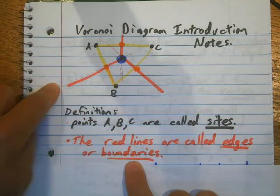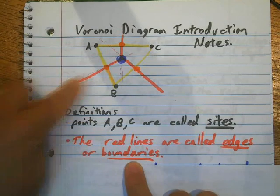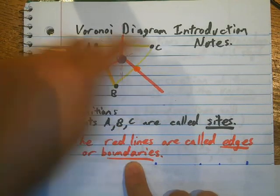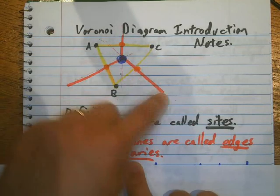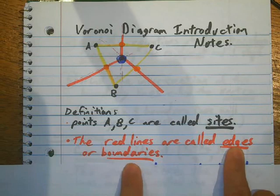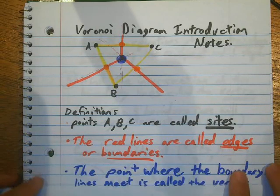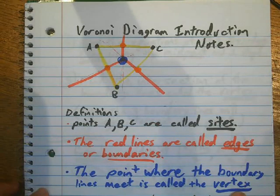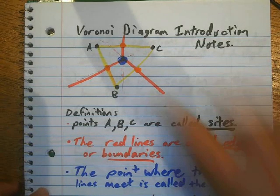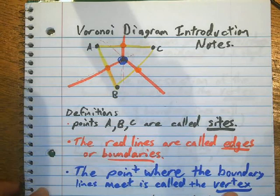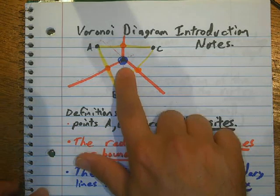The red lines here are boundary lines between A and B. This red line is a boundary between A and C. This red line is a boundary between B and C. Boundary lines, or sometimes they're called edges. And then where all three boundary lines meet is called a vertex. And no matter where you put these points, the boundaries will always intersect at one vertex.